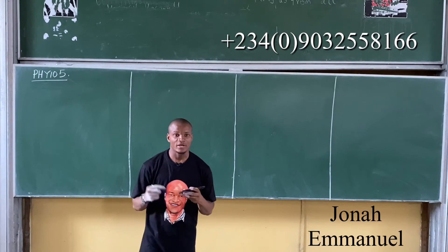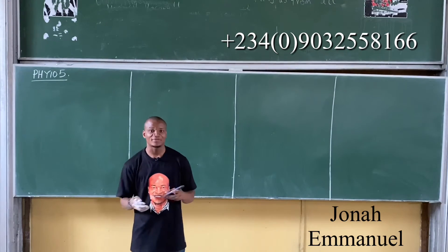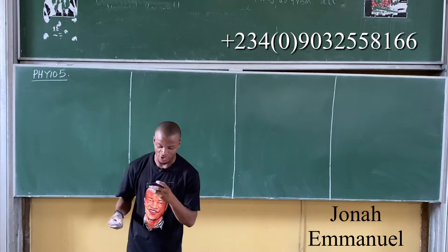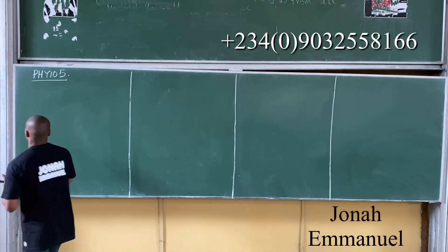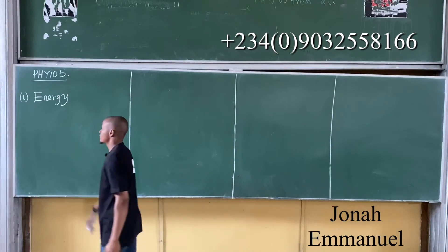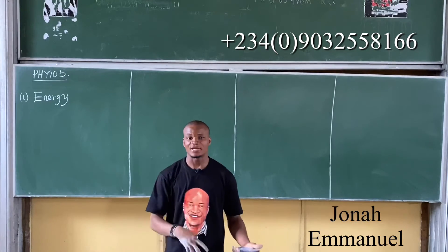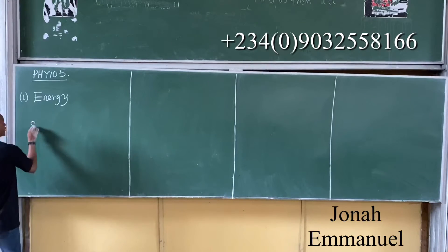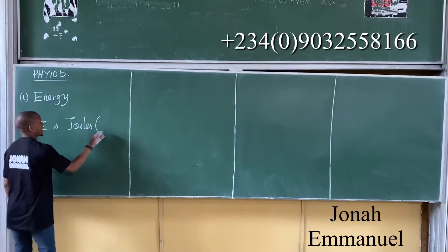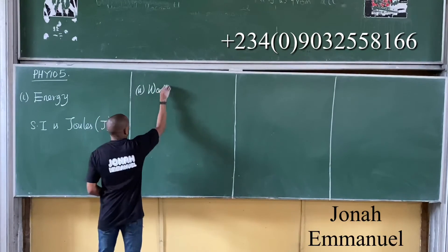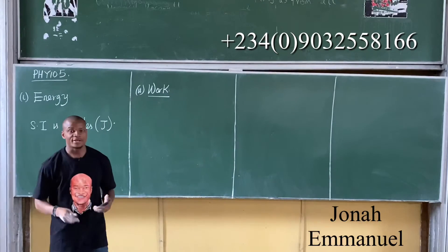Now let's look at question 2a — the definitions part. Give the physics definition of the following, stating their units. First: energy. Energy is simply the ability or capacity to do work. The SI unit of energy is joules.